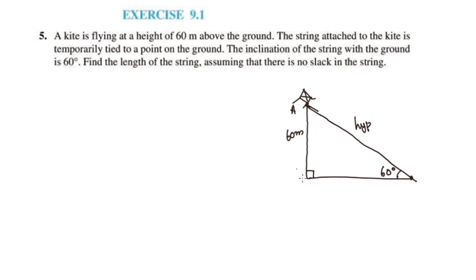We will call it triangle ABC. This is the right angle. In triangle ABC, if we consider AB, we consider AC, and angle C is 60 degrees. This angle C is opposite side AB. It is opposite over hypotenuse.